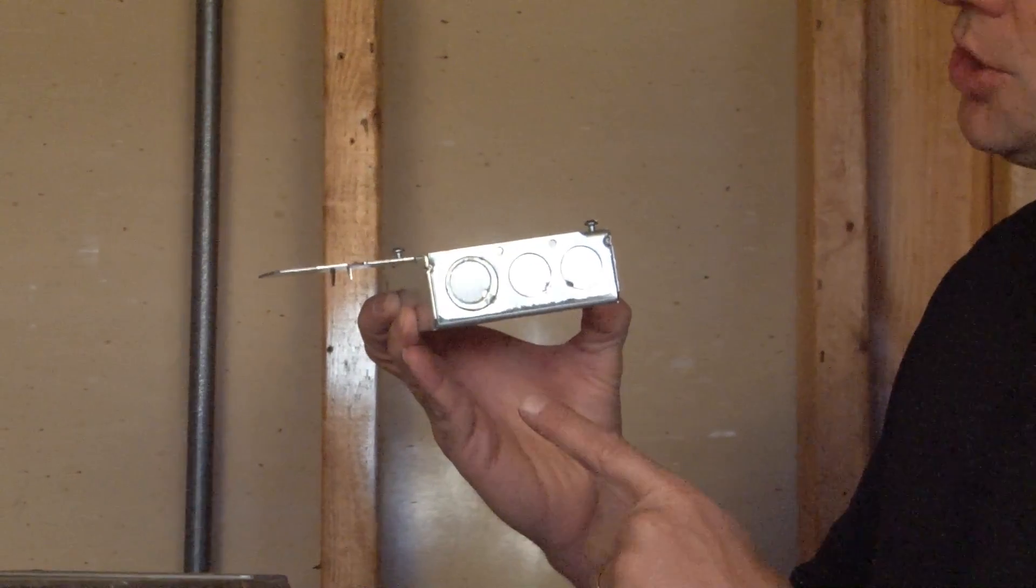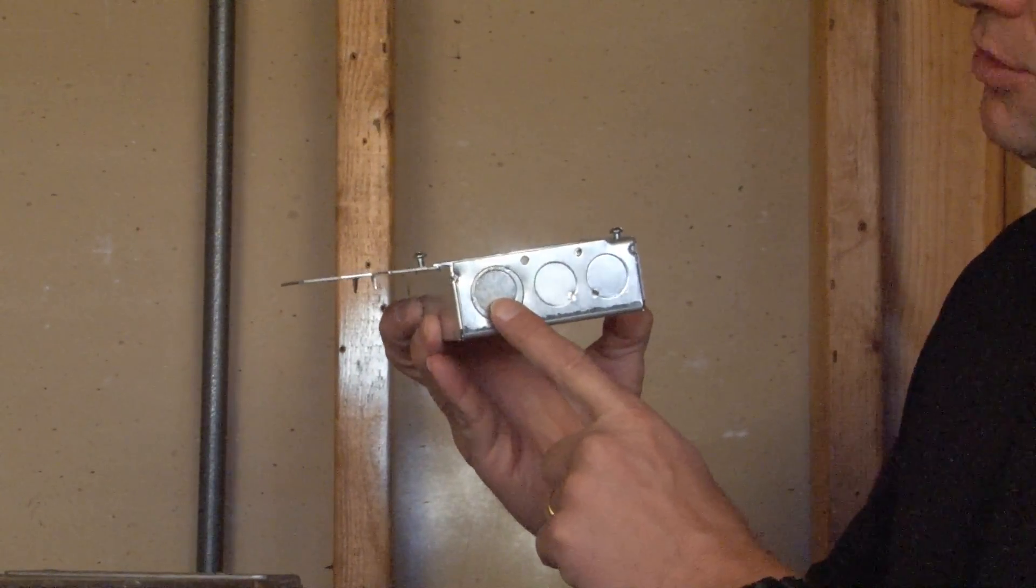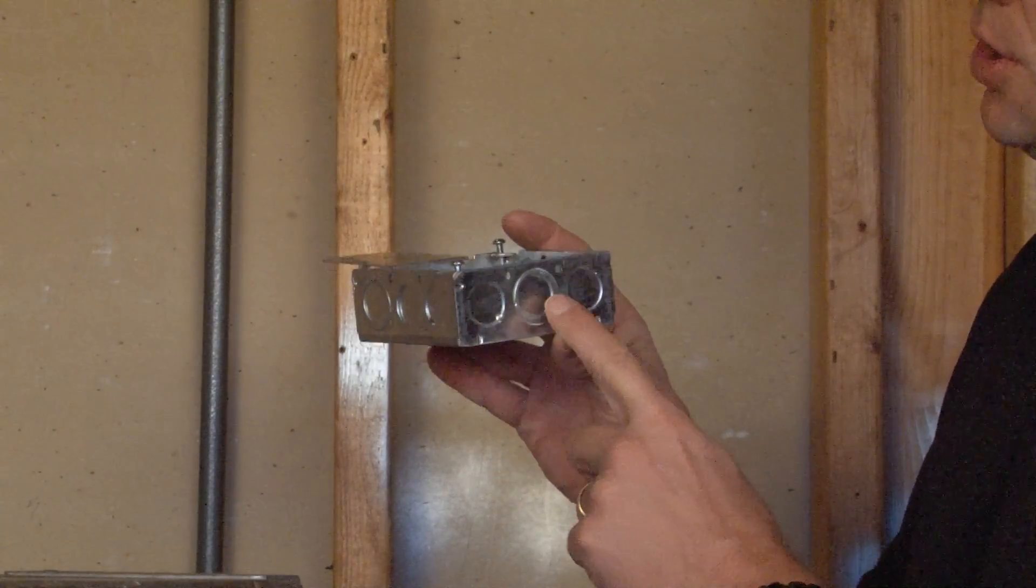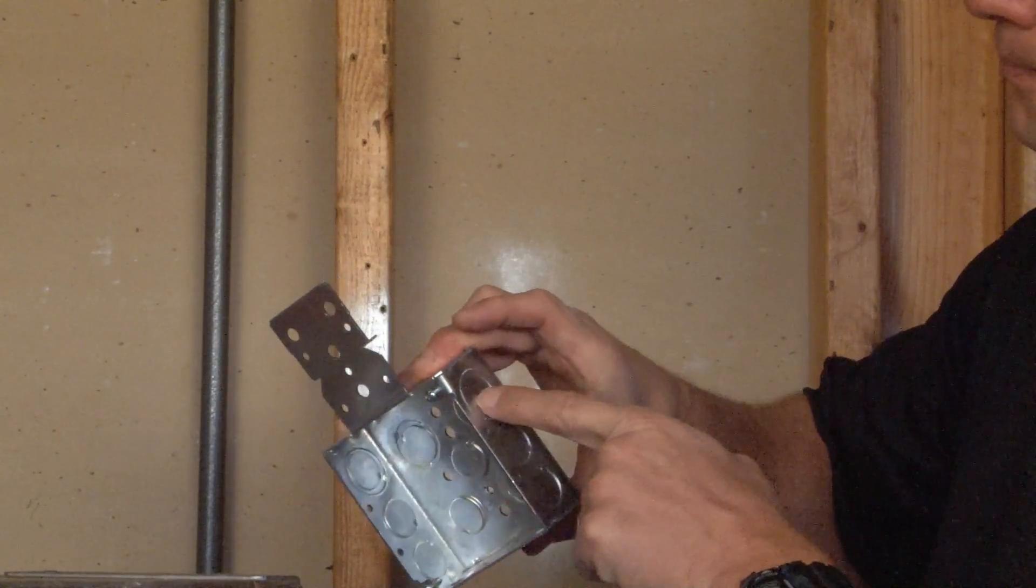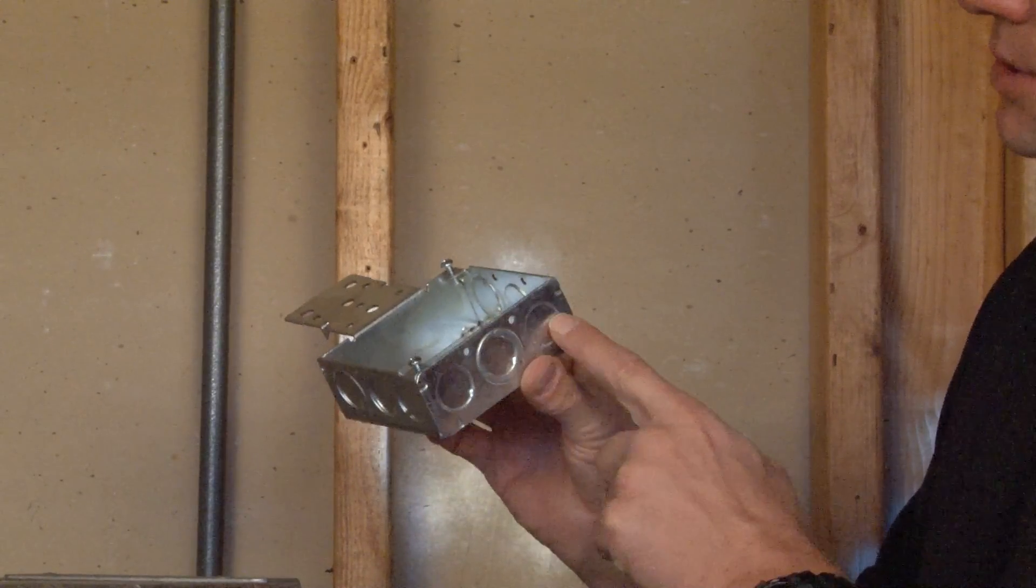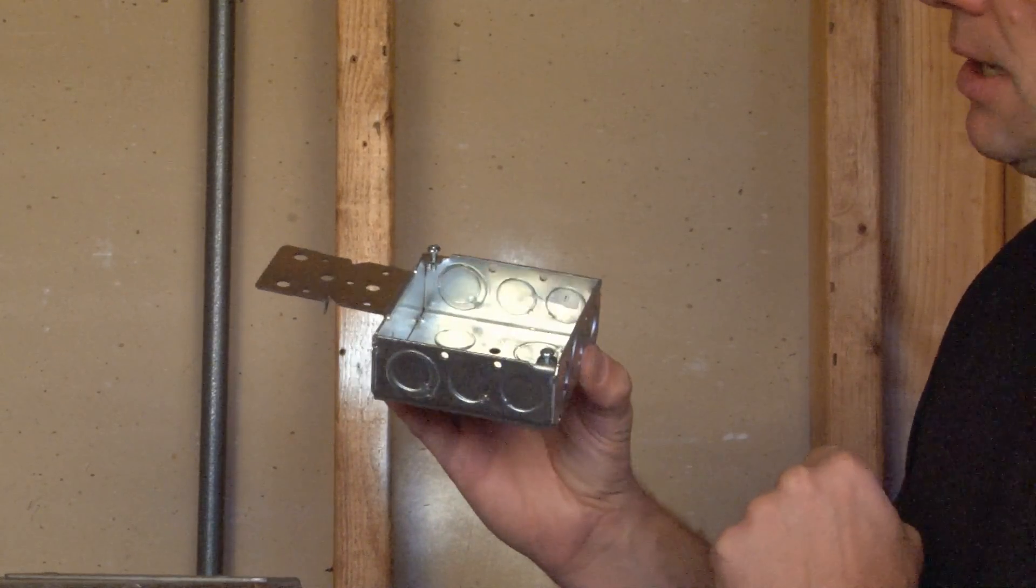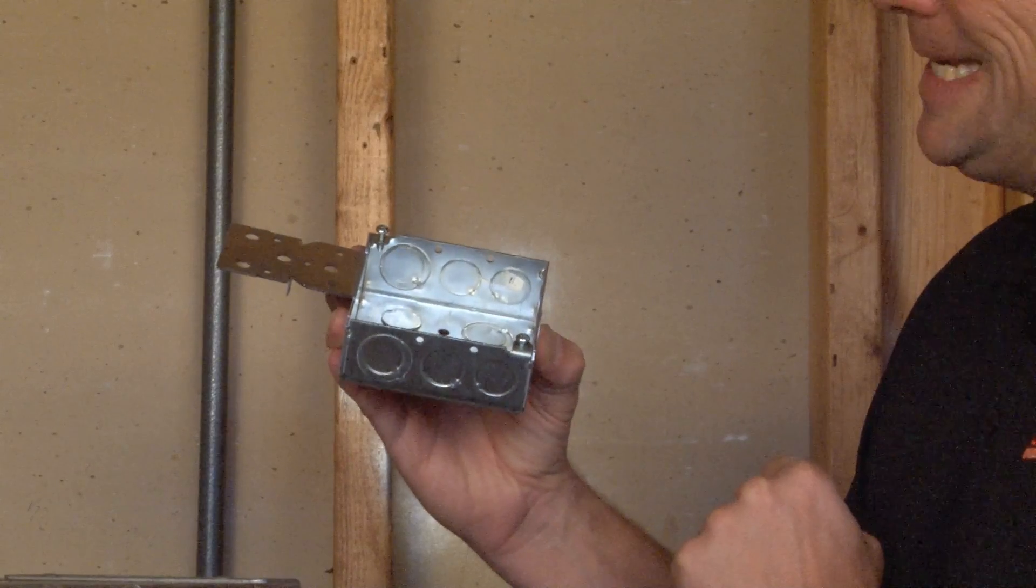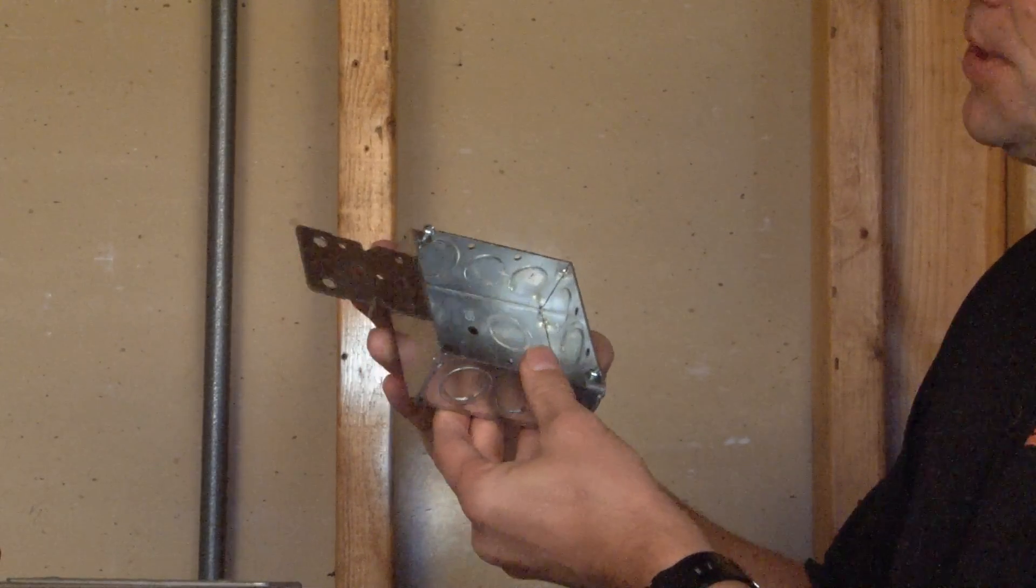This electrical box has combination half and three quarter concentric knockouts on each of the sides, as well as straight half inch knockouts in different locations, making conduit connection quick and easy. As you can see on this particular box,